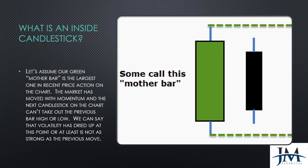Let's assume our green mother bar is the largest one in recent price action on the chart. The market has moved with momentum, and the next candlestick on the chart can't take out the previous bar's high and low. You're looking at two candles — the most recent candle and the candle before it. A mother bar is not just a small bar followed by another bar; it was a significantly large move with momentum, and the next candle can't take out that high and low.